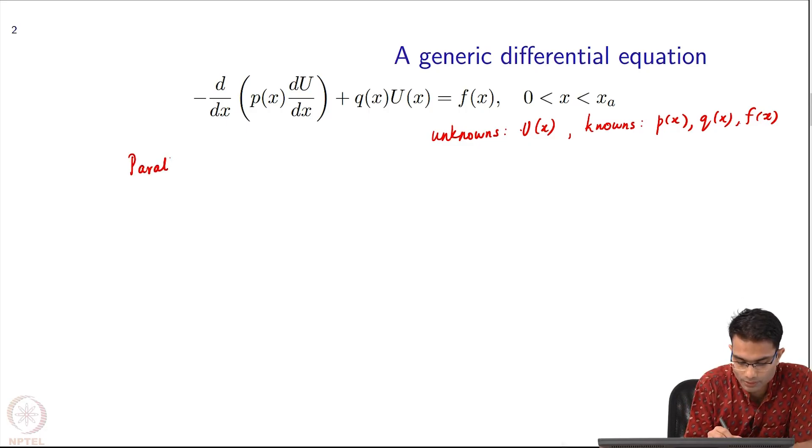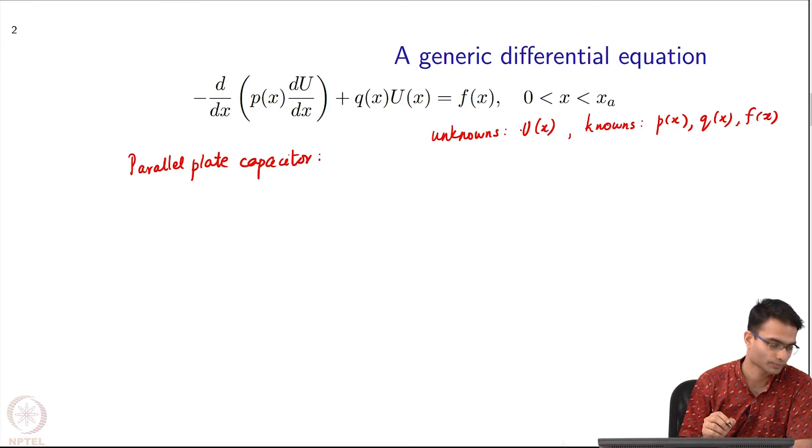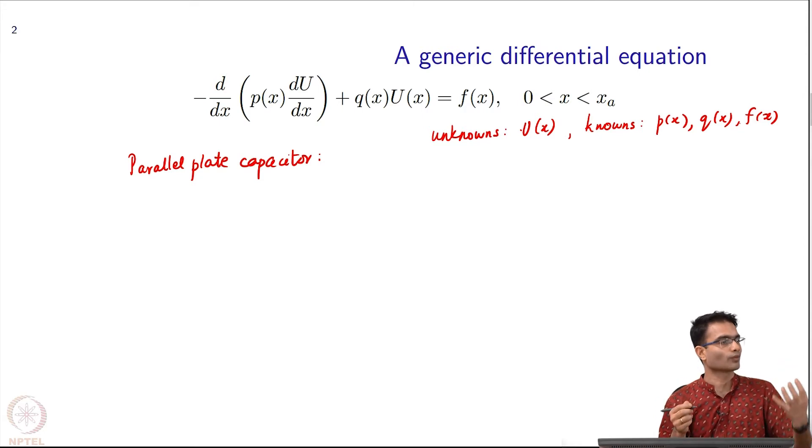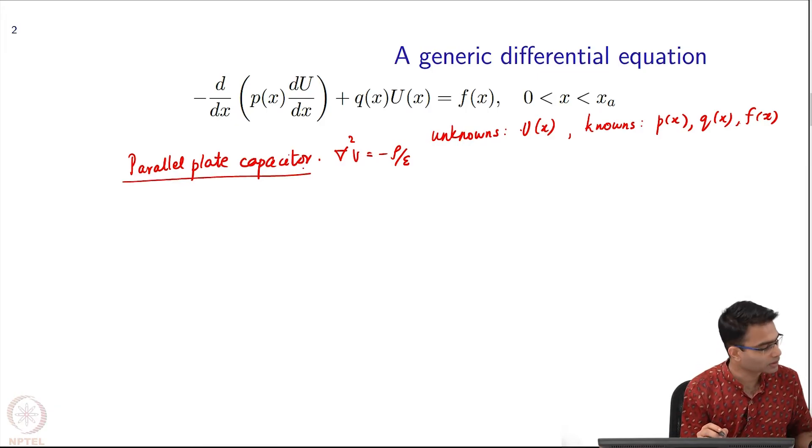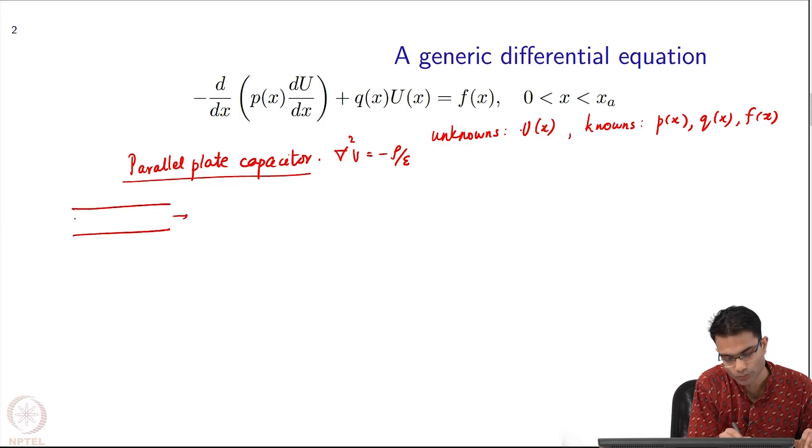For example, a parallel plate capacitor, a DC problem. For a DC problem you have a charge and you want to find out voltage - that's your DC problem. This is also called the Laplace equation: given a charge find out the potential everywhere. That was your del squared V equals minus rho by epsilon. This parallel plate capacitor looks something like this - you have a capacitor, infinite in both directions. This is grounded and this is at some voltage V.